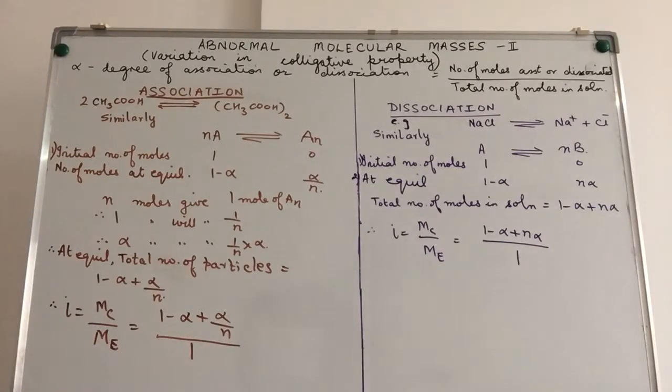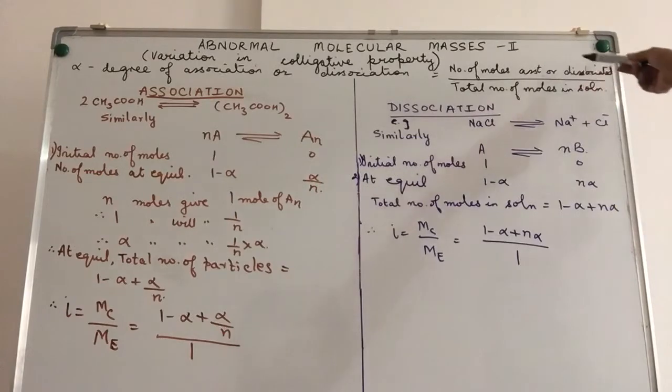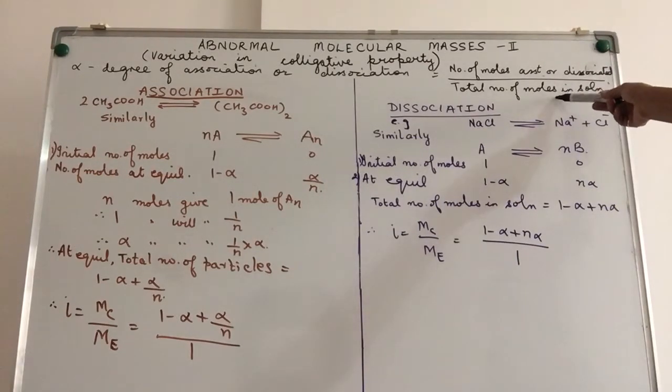How will we define alpha? It is nothing but the ratio of the number of moles associated or dissociated in solution divided by the total number of moles in solution. It is an expression to show how many moles have undergone association or dissociation with the total number of moles in solution.